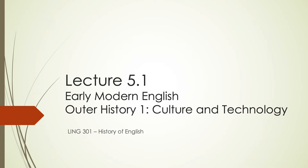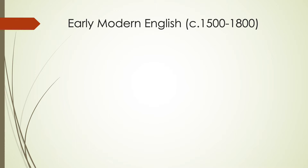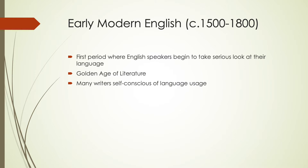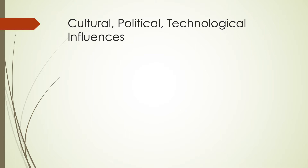The early modern English period happened from around 1500 to around 1800. This time period starts at the beginning of where the printing press comes in, and is the first period of time where English speakers are really starting to take a serious look at their language. This is what we sometimes refer to as the Golden Age of Literature, with lots of cultural, political, and technological influences happening during this time.